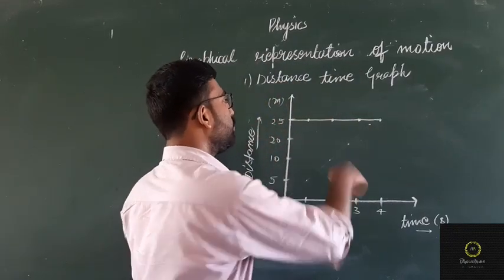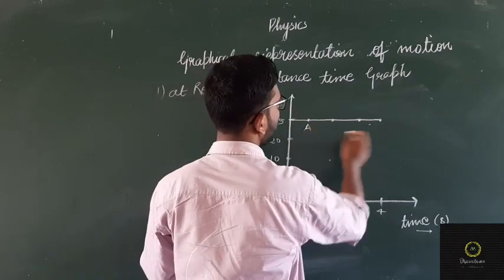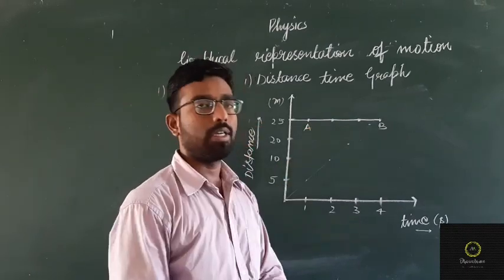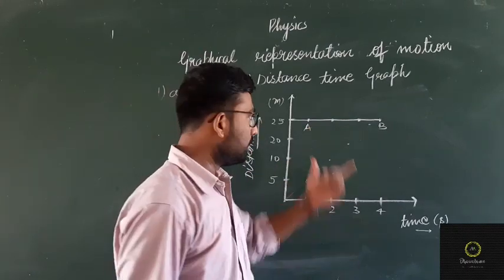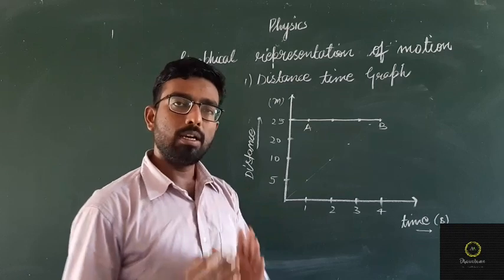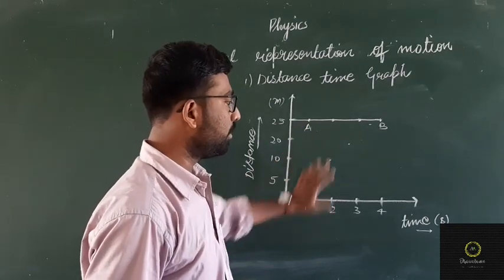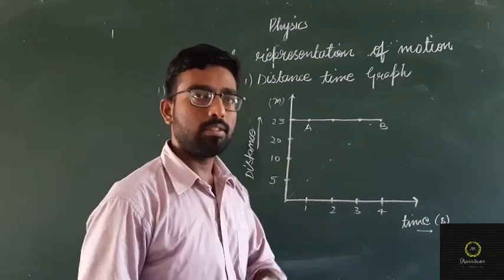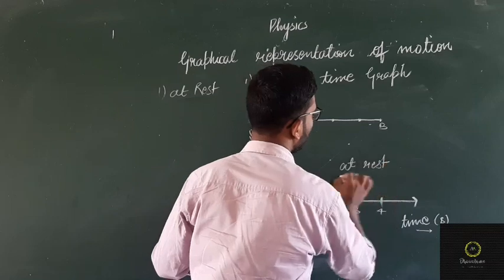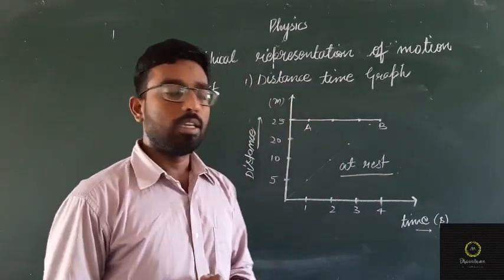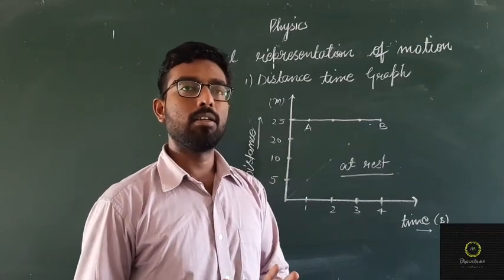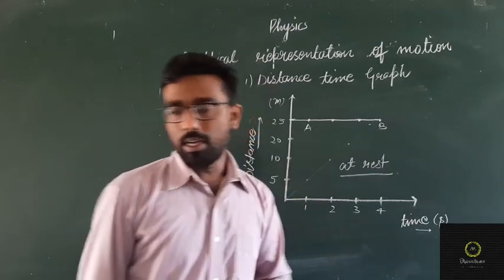Take two coordinates — mark this one as A and this one as B. The line AB is parallel to the time axis. When any line is parallel to the time axis, there is no angle between that line and the time axis, and that body is said to be at rest. There is no inclination with the time axis.